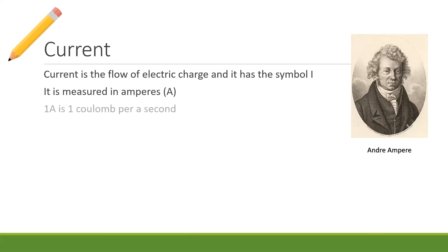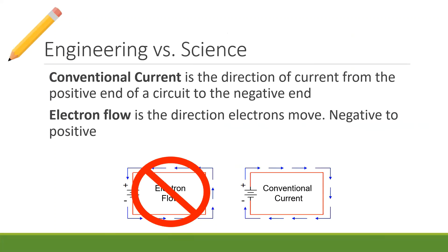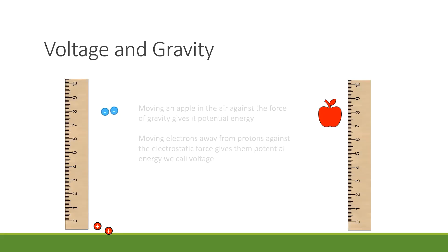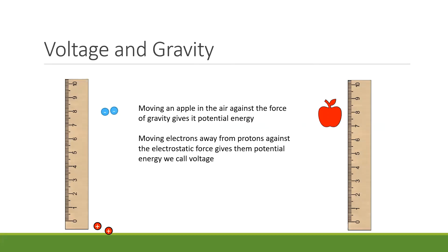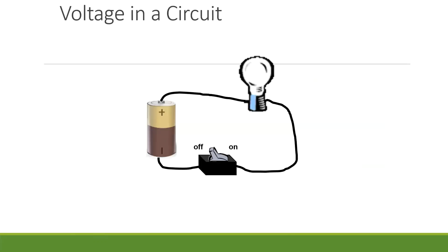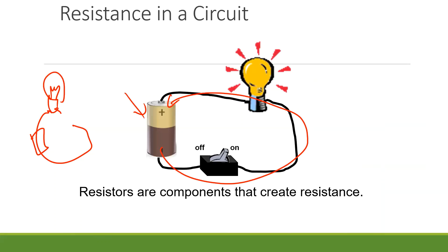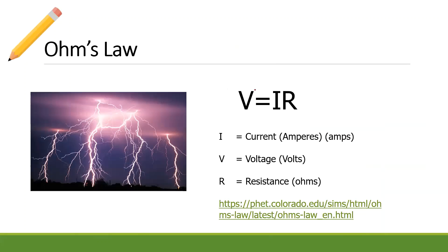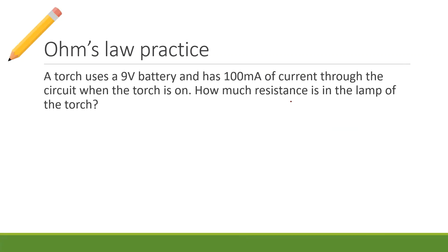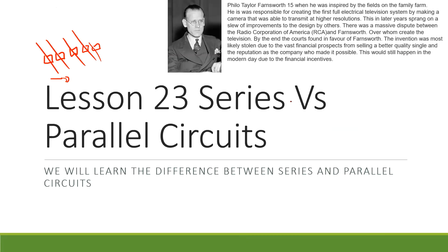We also talked about voltage — the push of those electrons — given as the symbol for volts. You can think of it like the gravitational force that causes an apple to fall, like the electrostatic force which causes electrons to move. Then we talked about resistance — the resistance to flow. We brought these ideas together into Ohm's law: V equals IR. As voltage goes up, current and resistance increase; if current goes up, resistance has to go down. Now it's one thing to talk about resistance, voltage, and current, but it's another to talk about how they exist in a circuit.